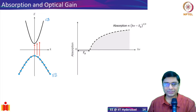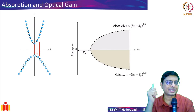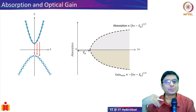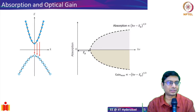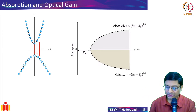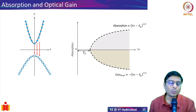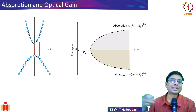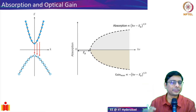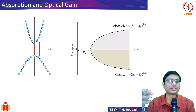Now, what happens if I consider a hypothetical scenario where I invert the case? If all my conduction band is filled up and my valence band is completely empty — filled with holes — then whenever you have an electron at higher energy and a corresponding hole, it will come down, recombine, and emit a photon.